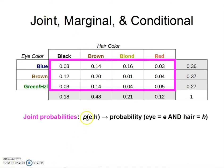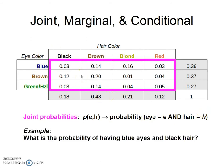This is how they're denoted: P(E and H)—the probability that the eye is some color and the hair is some color. Good so far? Here's an example: What is the probability of having blue eyes and black hair? Got it—right there: blue eyes and black hair.